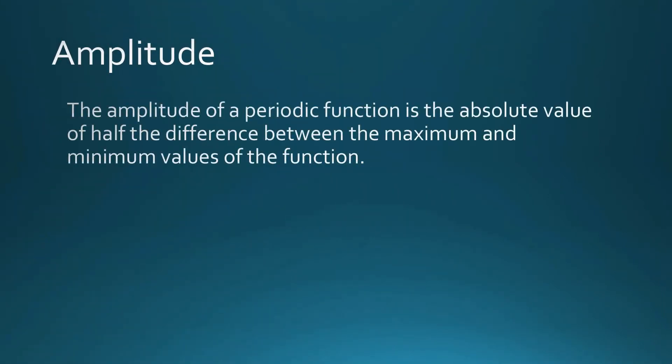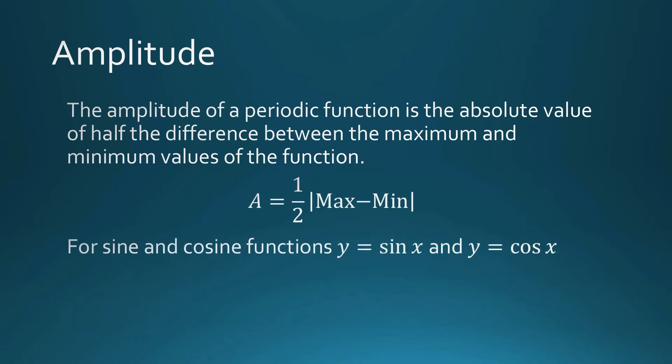The amplitude of a periodic function is the absolute value of half the difference between the maximum and minimum values of the function. This is how you compute for the amplitude. For your simple sine and simple cosine functions, the maximum is 1 and the minimum is negative 1, so their amplitude is 1.